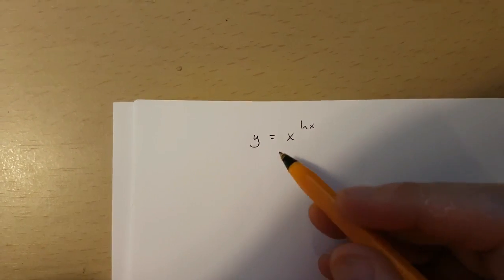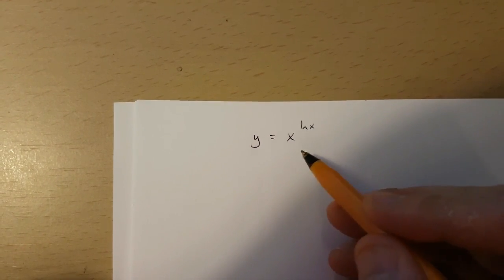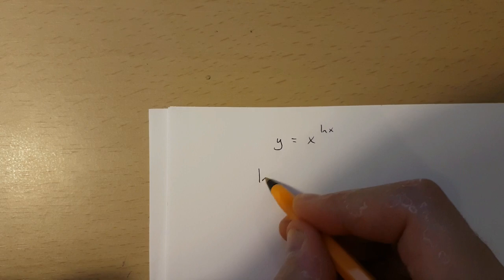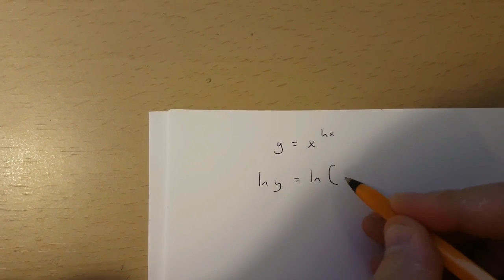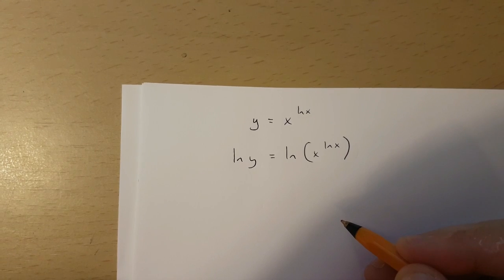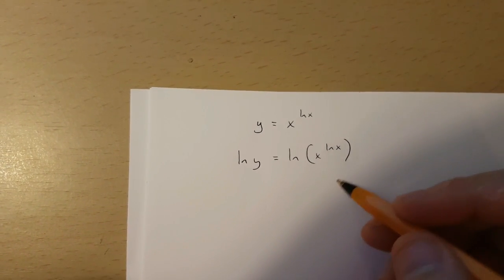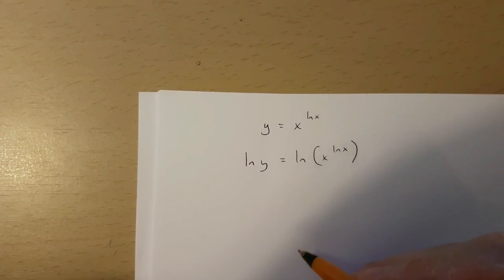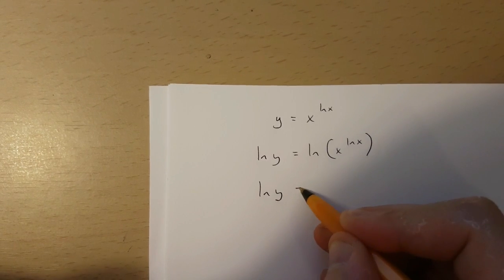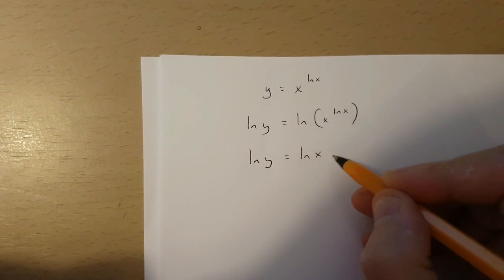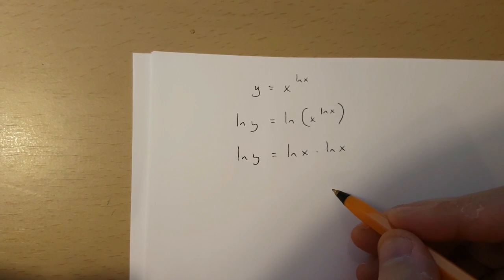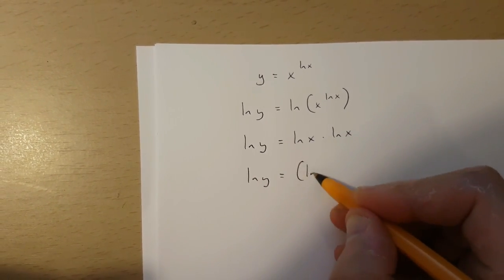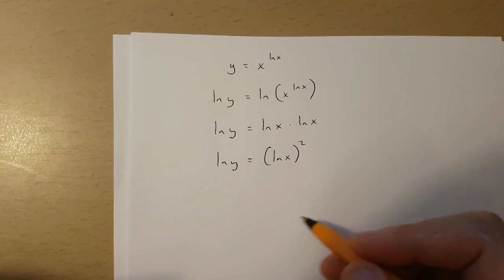In this video I'm going to be showing you how to differentiate y equals x to the power of ln x. The first thing I'm going to do is take the natural logarithm of both sides of this equation. Because of logarithmic rules, I can drag out ln x from the brackets. So what I get is ln y is equal to ln x times ln x, which is the same as ln y equals ln x squared.